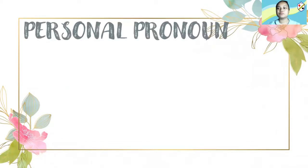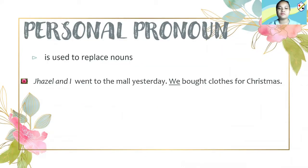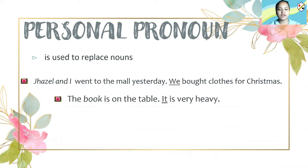The first type is personal pronoun. When we say personal pronoun, it is used to replace nouns — the name of a person, thing, animal, place, or event. For example, Jaisel and I went to the mall yesterday. We bought clothes for Christmas. So the pronoun here is 'we,' and it talks about Jaisel and I. Next: the book is on the table. It is very heavy. So our pronoun here is 'it,' and it talks about the book.